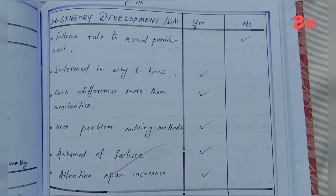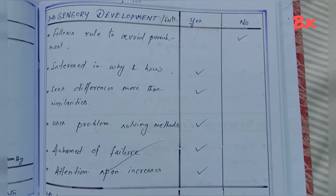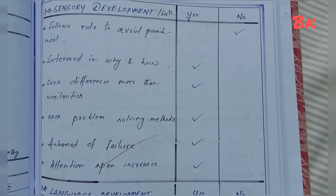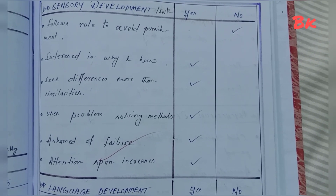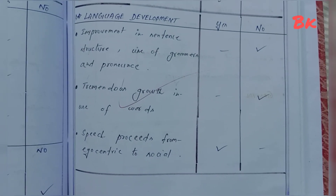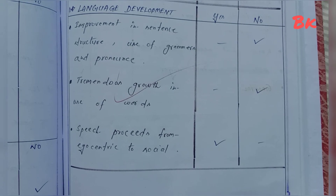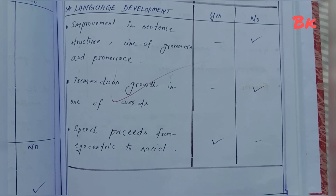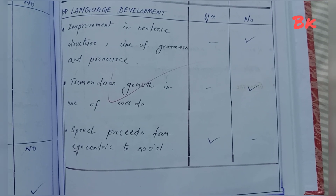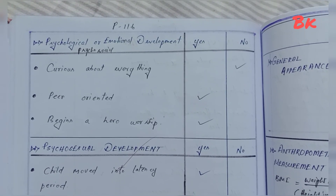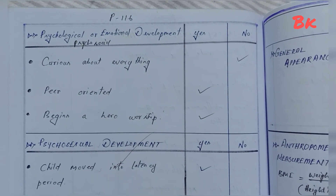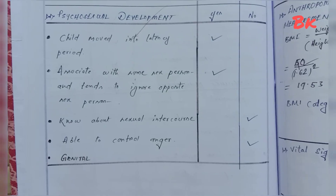Sensory development: follows rules to avoid punishment, interested in why and how, sees differences more than similarities, uses problem-solving methods, attempts at failure, attention span increases. Language development: improvement in sentence structure, use of grammar and pronouns, tremendous growth in use of words, then speech proceeds from egocentric to social.